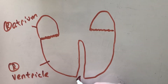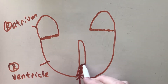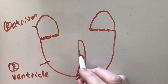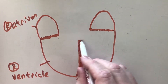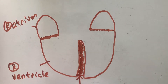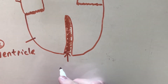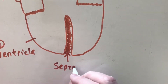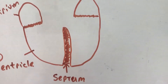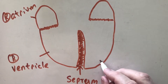This is my ventricular septum. If you remember, this is basically all muscle, and the ventricular septum separates my right ventricle from my left. So I have my septum here, and then I have my left ventricle.